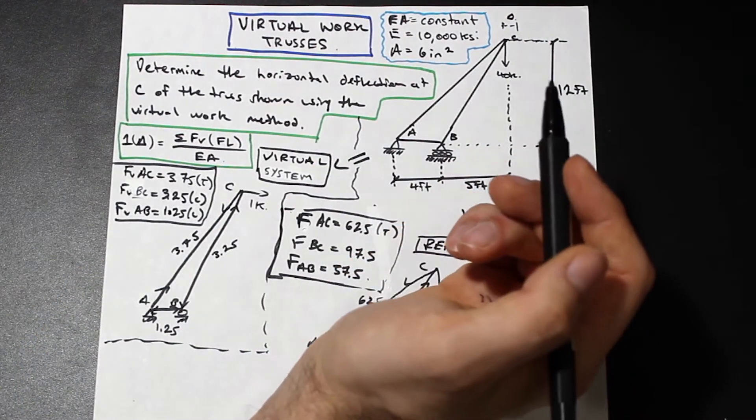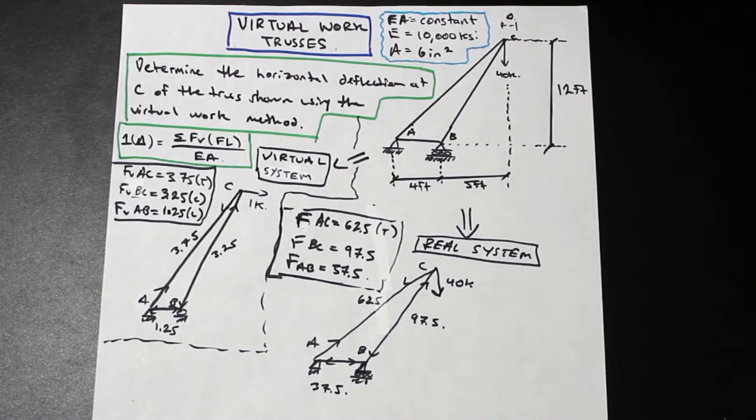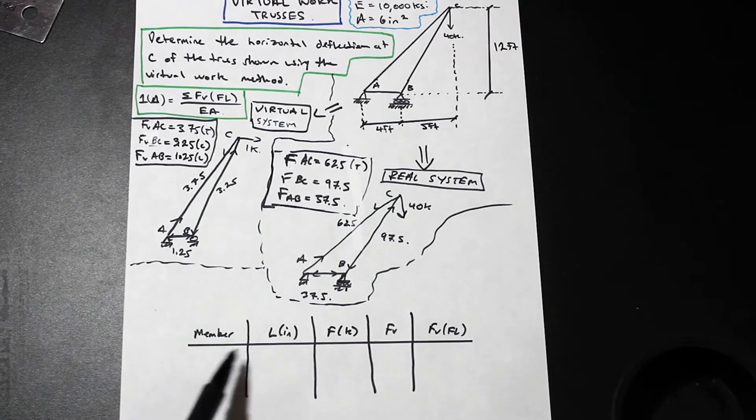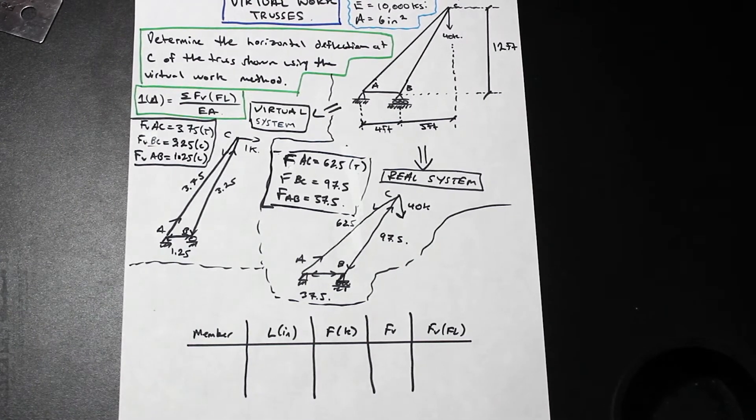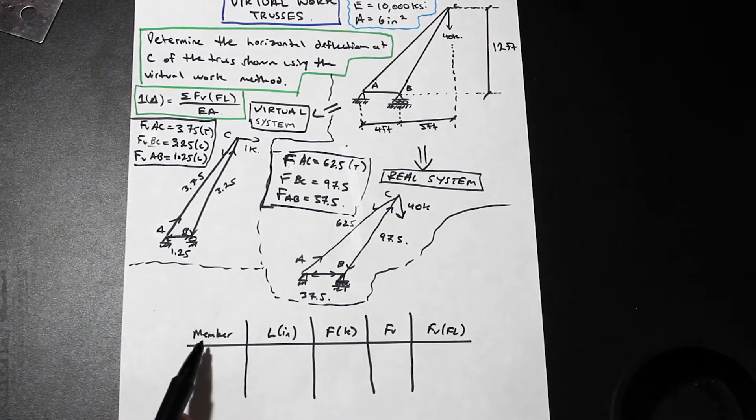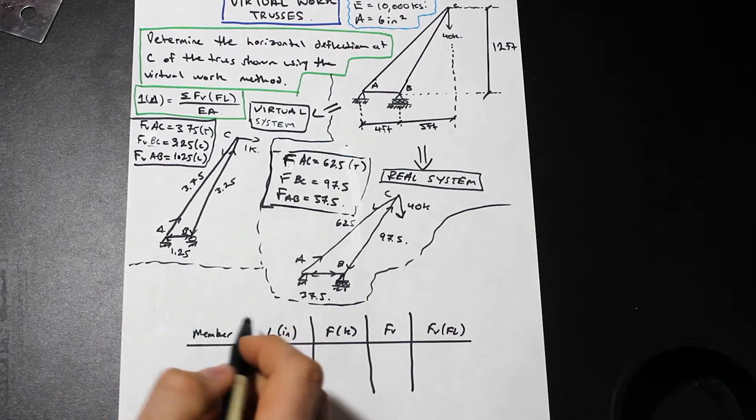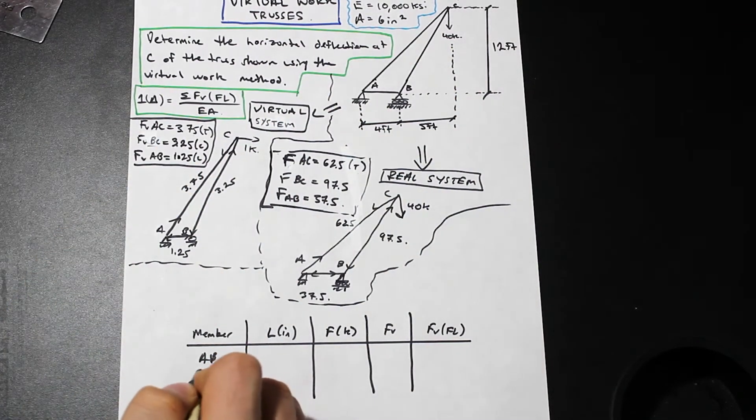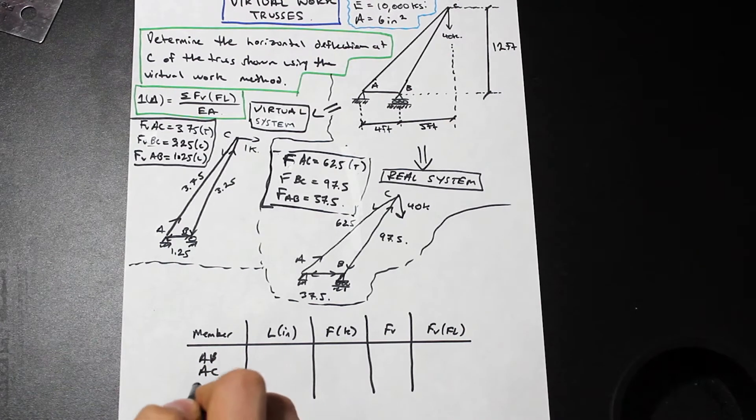Let's go ahead and we'll make a table. Now that we've written this table, this is kind of the table that you're going to want to write when you do any virtual work problem for a truss. We start with the member. Our members are AB, BC, and AC. So we'll say AB, AC, and BC.